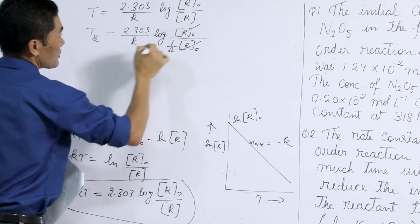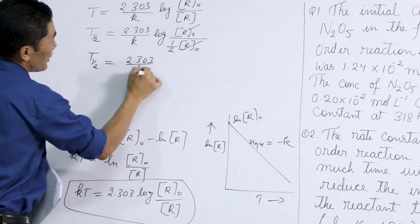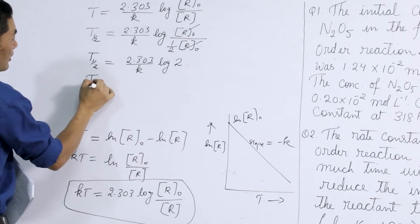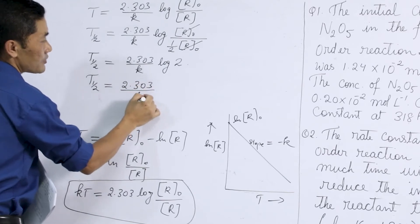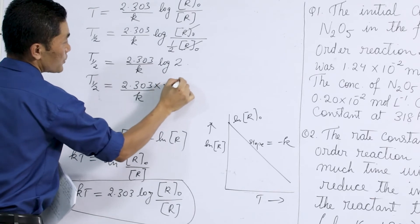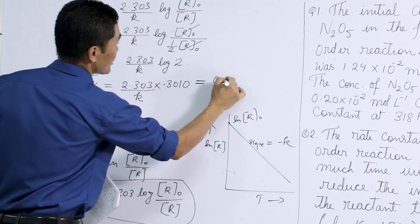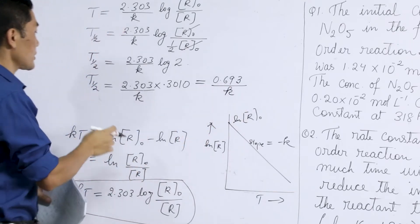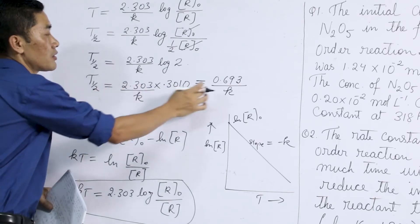Then we will get half-life period equal to 2.303/k × log 2. So the half-life period of the first order reaction will be equal to 2.303/k × log 2, whose value is 0.3010. Multiplying this out, we get 0.693/k, where k is the rate constant. So the half-life period of a first order reaction can be easily calculated using this equation.